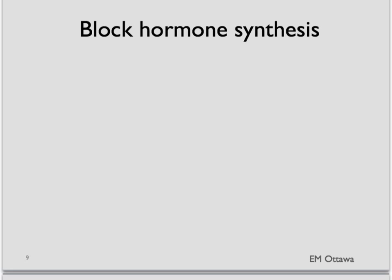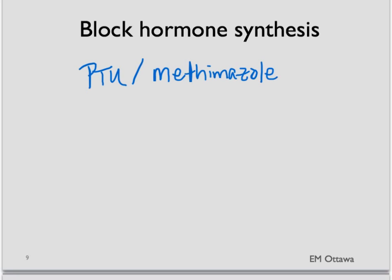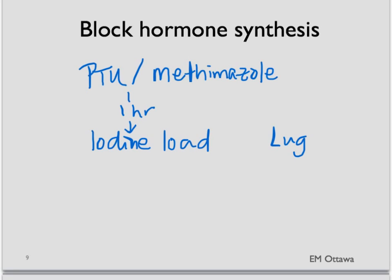We first block thyroid hormone production by the thyroid gland. We do this by giving a medication called PTU, or propylthiouracil. Another medication called methimazole can also be given. About an hour after this, we also block the release of hormone that has already been made by iodine-loading the body — we do this in the form of Lugol's solution or SSKI.